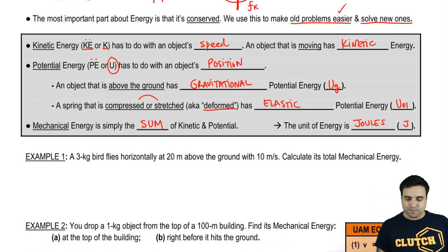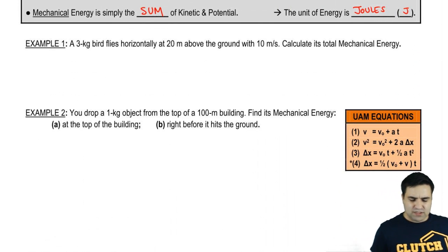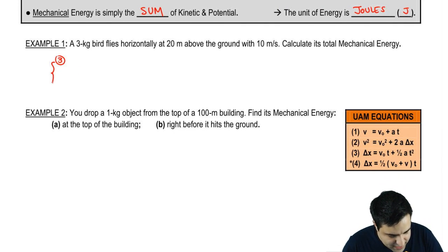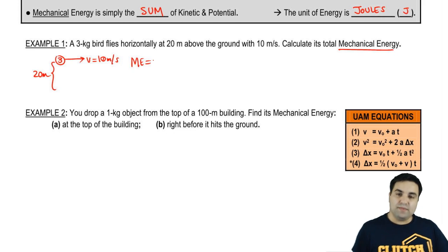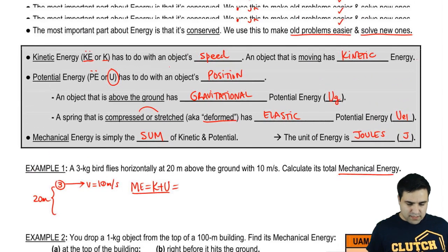I have example one. A three kilogram bird flies horizontally at 20 meters above the ground with 10 meters per second. Three kilogram bird flying at a height of 20 meters. And it's flying horizontally, so it looks like this, with 10 meters per second. I want to calculate its total mechanical energy. Well, how do I find mechanical energy? Mechanical energy is K plus U. Let me write this up here. I don't think I wrote that there.